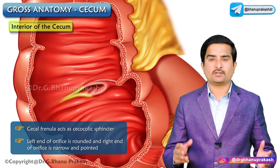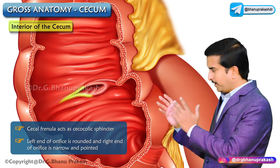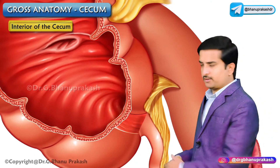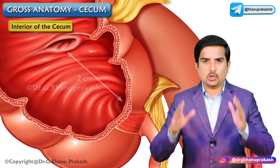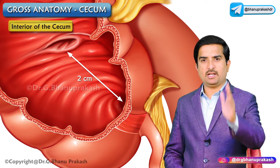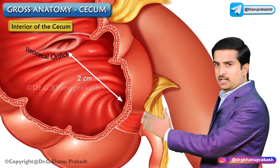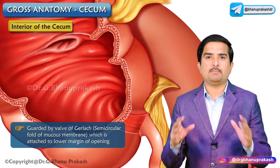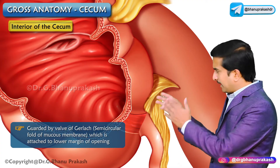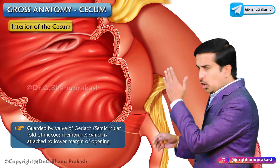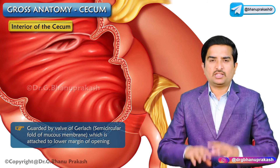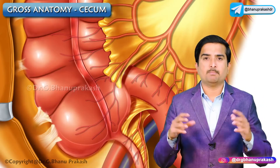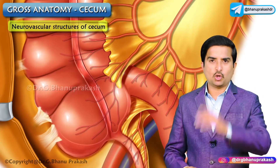The appendicular orifice is located 2 centimeters below and behind the ileocecal orifice. It is guarded by the valve of Gerlach, which is a semilunar fold of mucous membrane attached mainly to the lower margin of the opening. This completes the discussion of the orifices of the cecum.